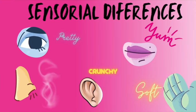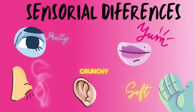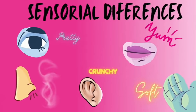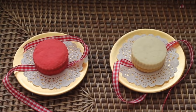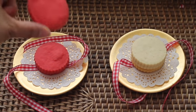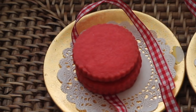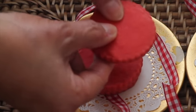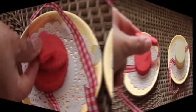First, let's talk about the sensorial differences. The shortbread cookie is lighter in weight, has a more rough surface, a strong buttery aroma and taste, looks very pretty to the eye, and has a beautiful crunch that melts in your mouth on the first bite.